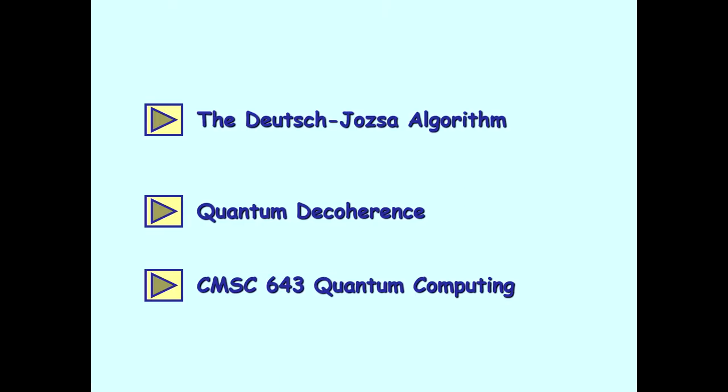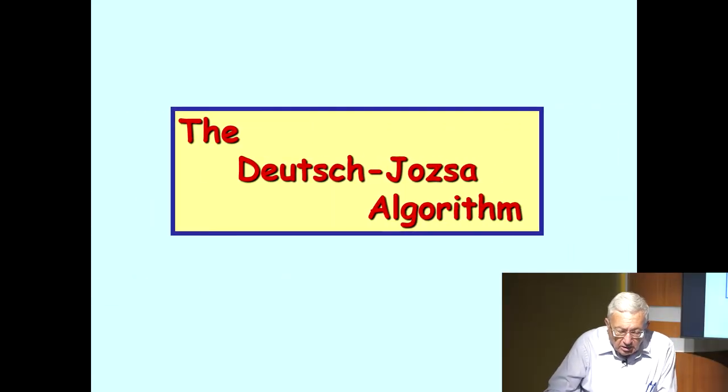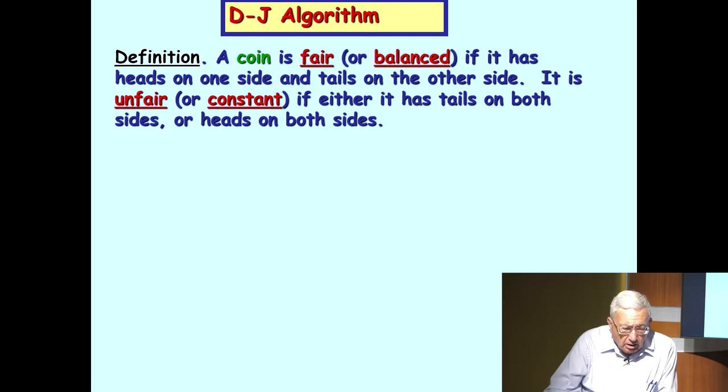Let me begin by showing you the first quantum algorithm ever invented. It was invented by David Deutsch, a student of John Wheeler. It's now called the Deutsch-Jozsa algorithm. Joseph added, basically, in addition to the algorithm. Basically, it's Deutsch's algorithm. Definition. Let me begin. I'd like to define the algorithm. A coin is said to be fair or balanced if it has heads on one side and tails on the other side. It is unfair or constant if either it has tails on both sides or heads on both sides. You can get those coins at magic stores if you like.